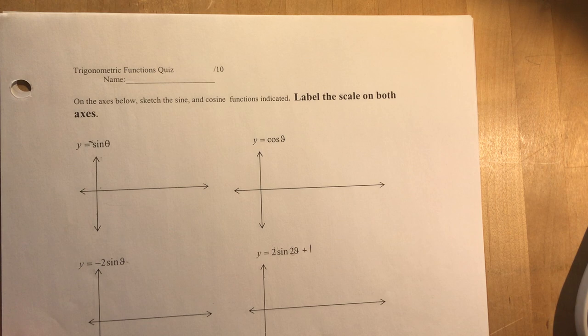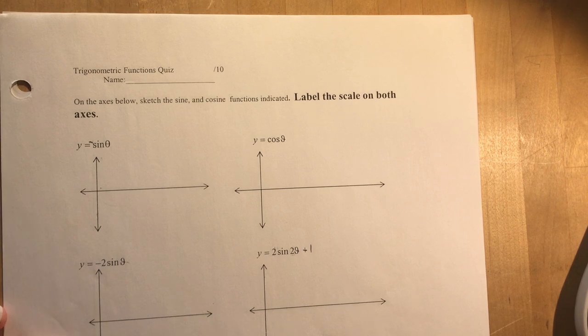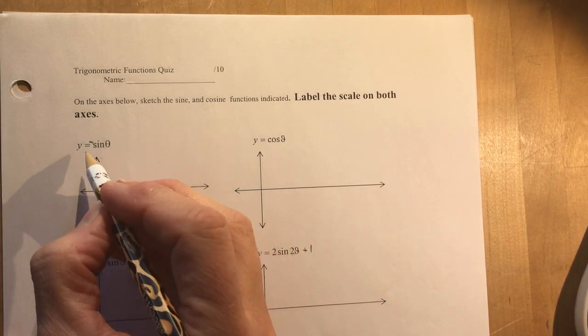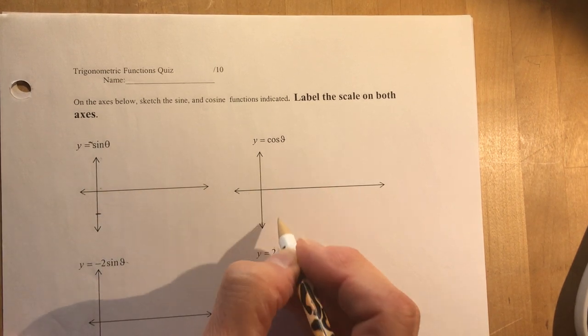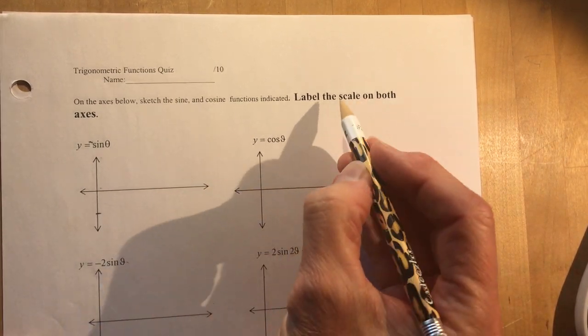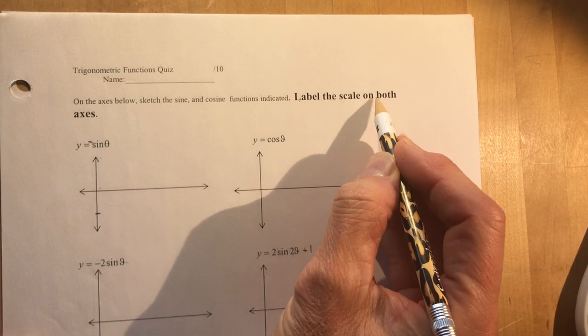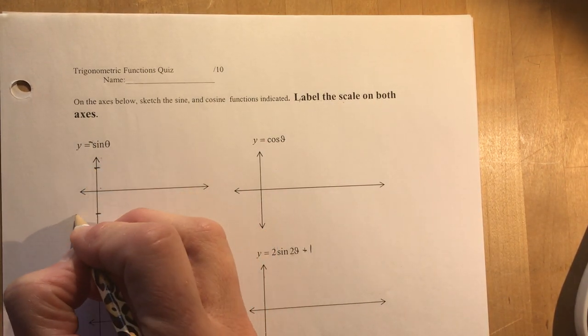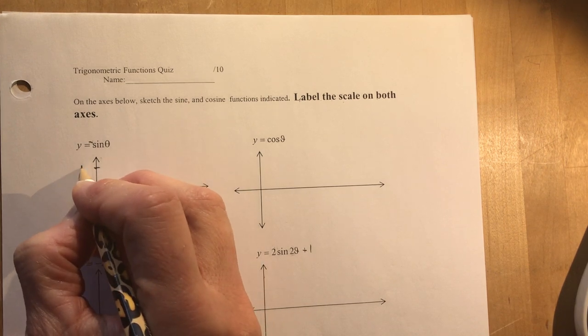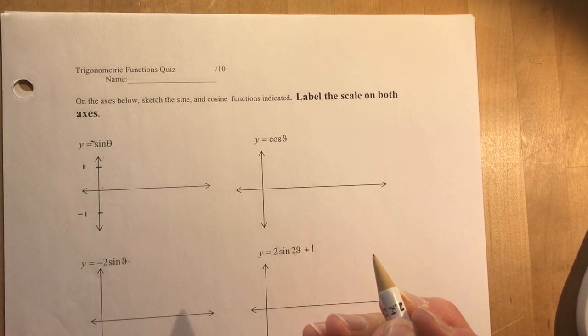So I'm going to sketch these functions for you so that you know what you're doing hopefully by the time you're done. Because the axes don't have any scale on it, it says label the scale on both axes, make sure you do that. Some students didn't do that in my class and of course I couldn't give them full marks because I didn't know if they knew what they were doing.